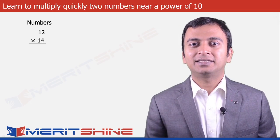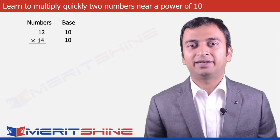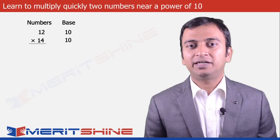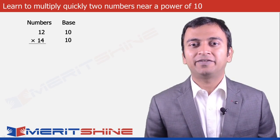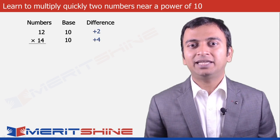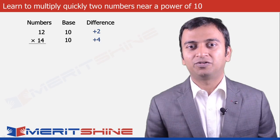In our case, the base would be 10. Now we will proceed to find out the difference of the given number from our base. 12 minus 10 is plus 2, and 14 minus 10 is plus 4.